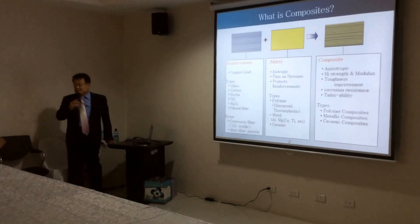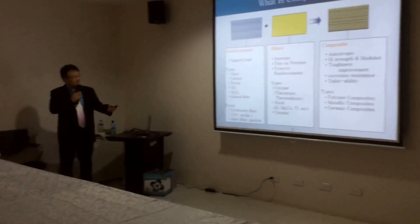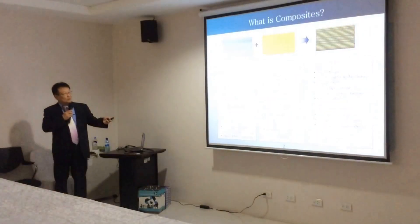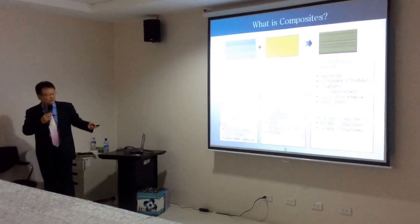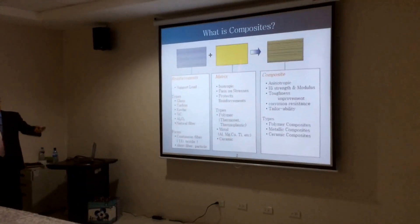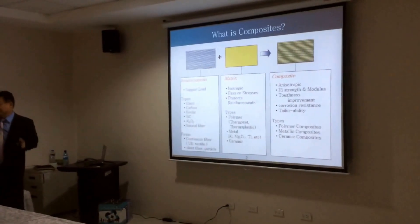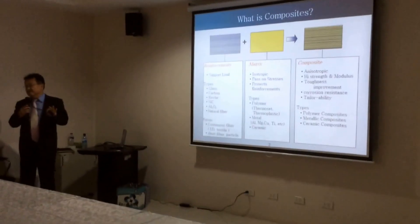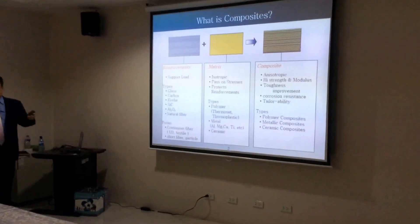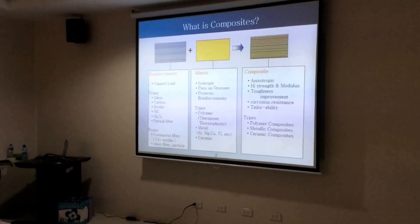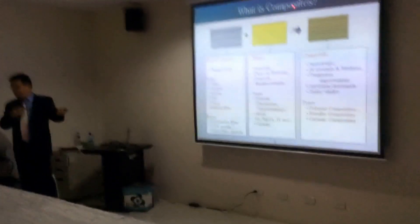Hello again and good afternoon. My topic is processing of natural fiber composites. As is well known, a composite is composed of matrix and reinforcements. Reinforcements are composed of various fibers including natural fibers. The matrix can be divided into two areas: thermoplastics and thermosets, and depending on how you process them you can have a good composite with these two in combination.